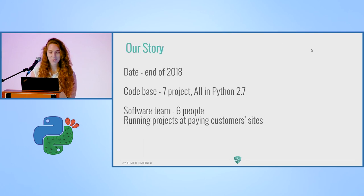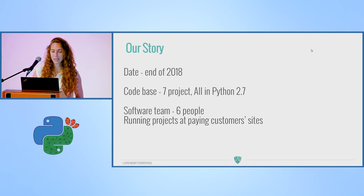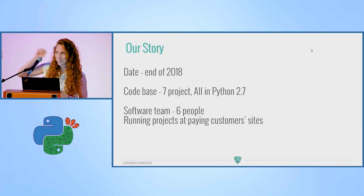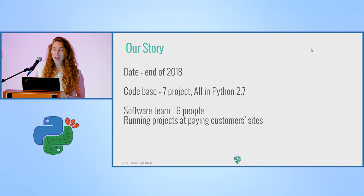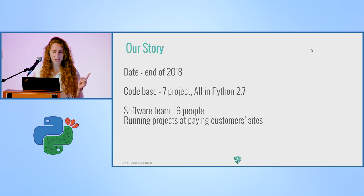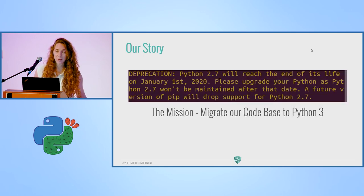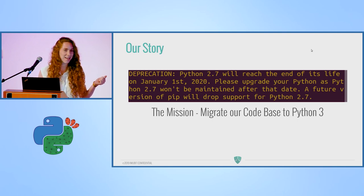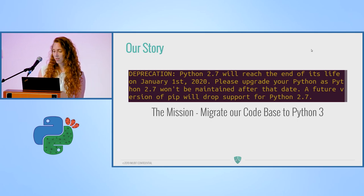I'll start with telling you our story. The date was the end of 2018. Our code base was seven projects, all in Python 2.7. Our software team was six people, some of them sitting over here, and we had running projects and paying customers' sites. Then one day we got this message — I'm sure some of you have seen it — and we began our mission to migrate our code base to Python 3.